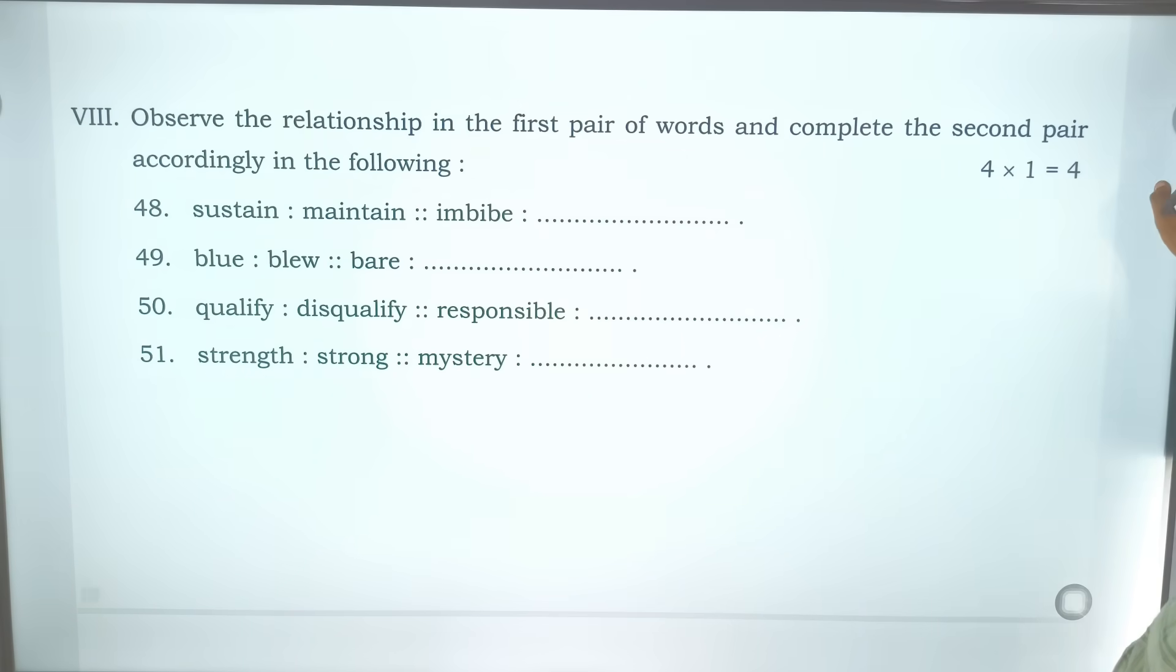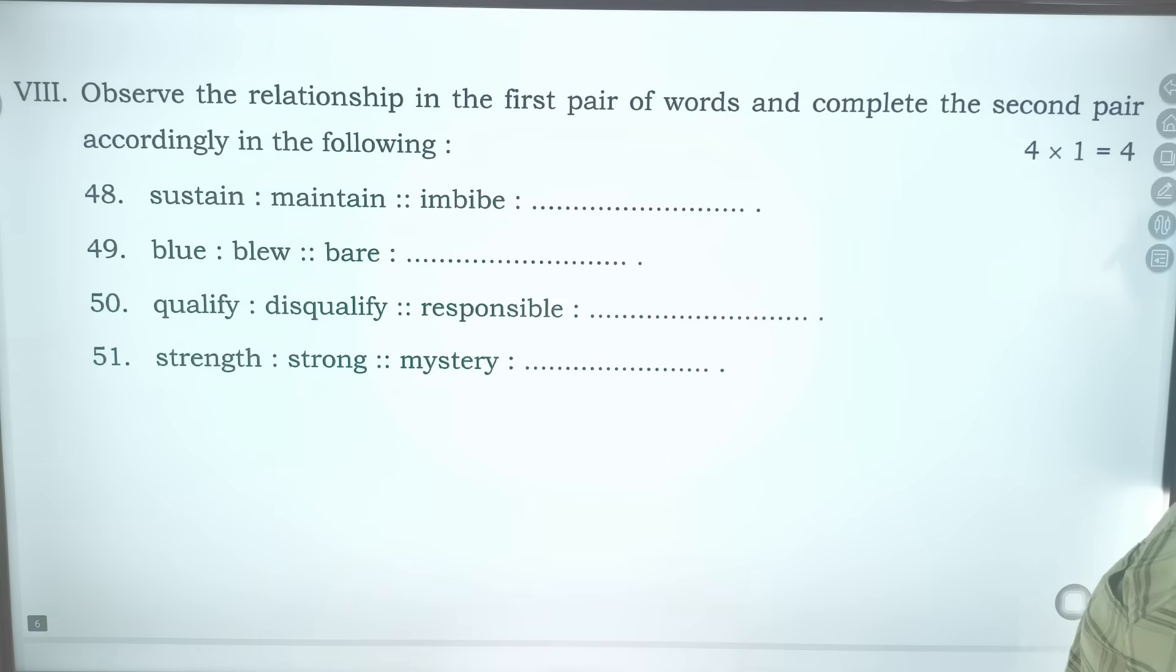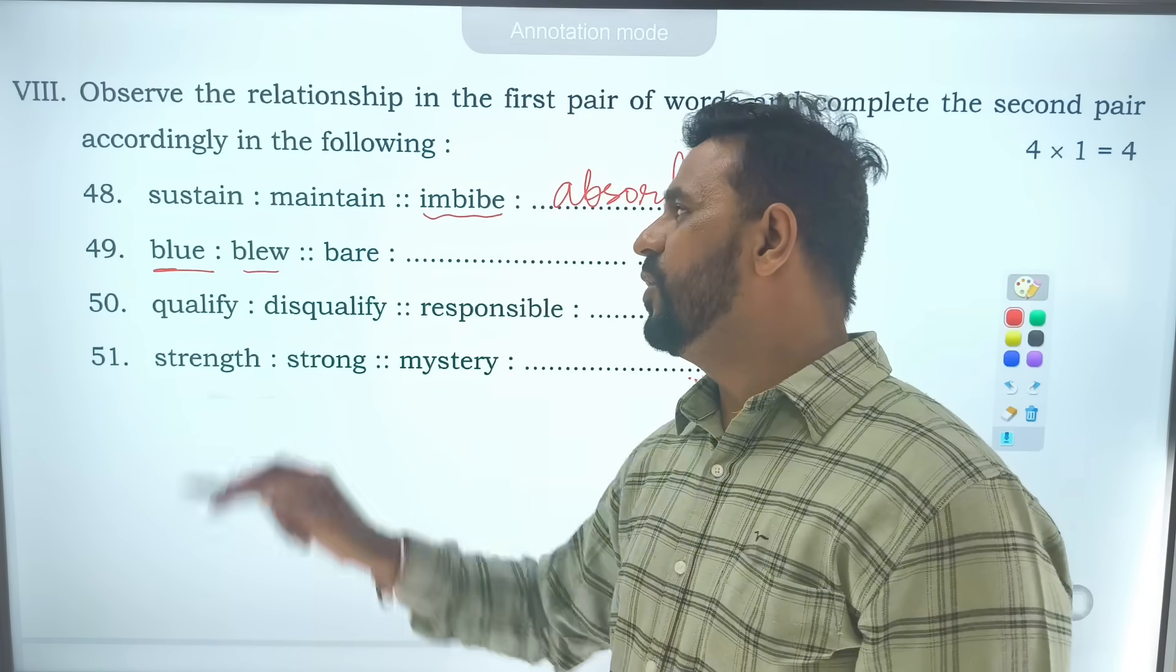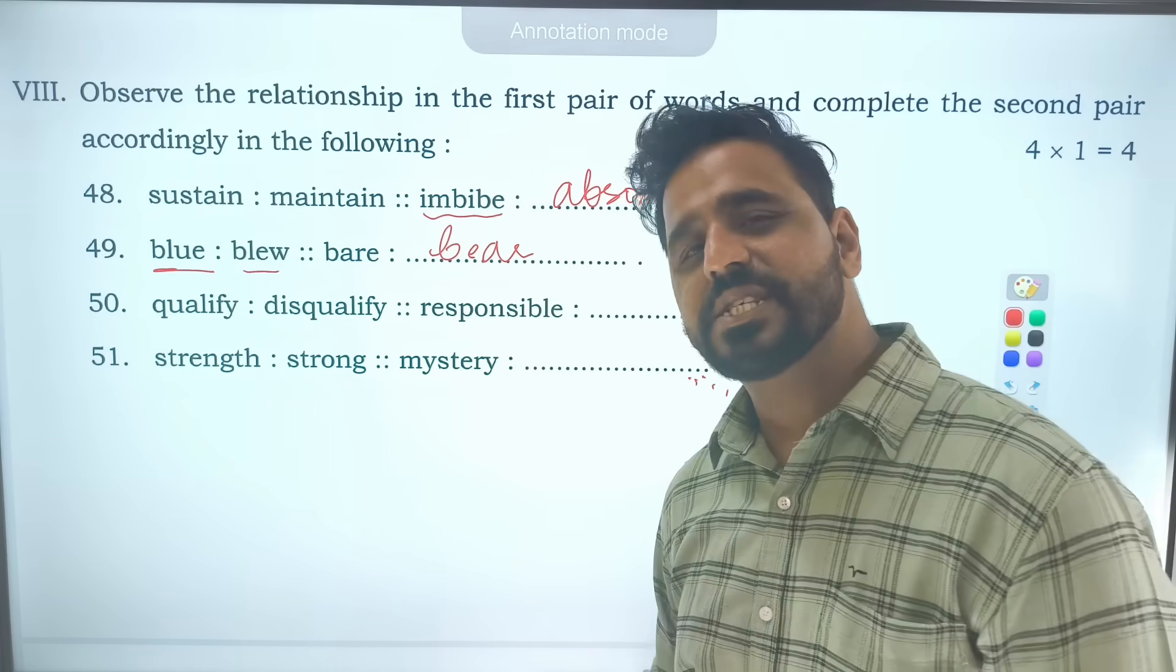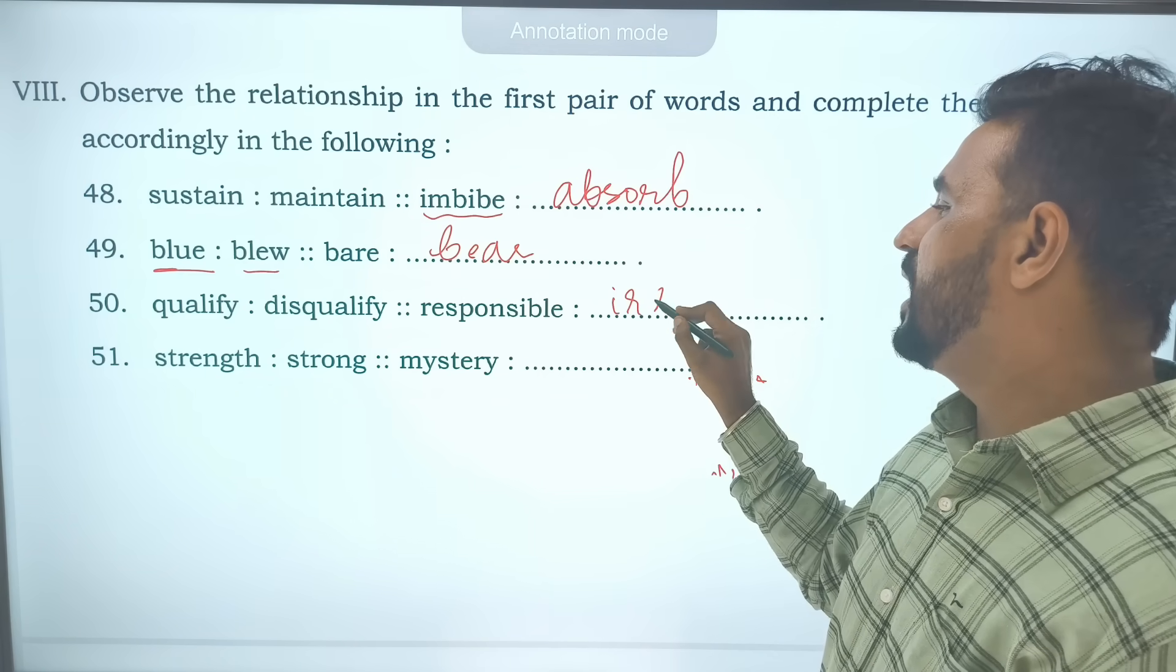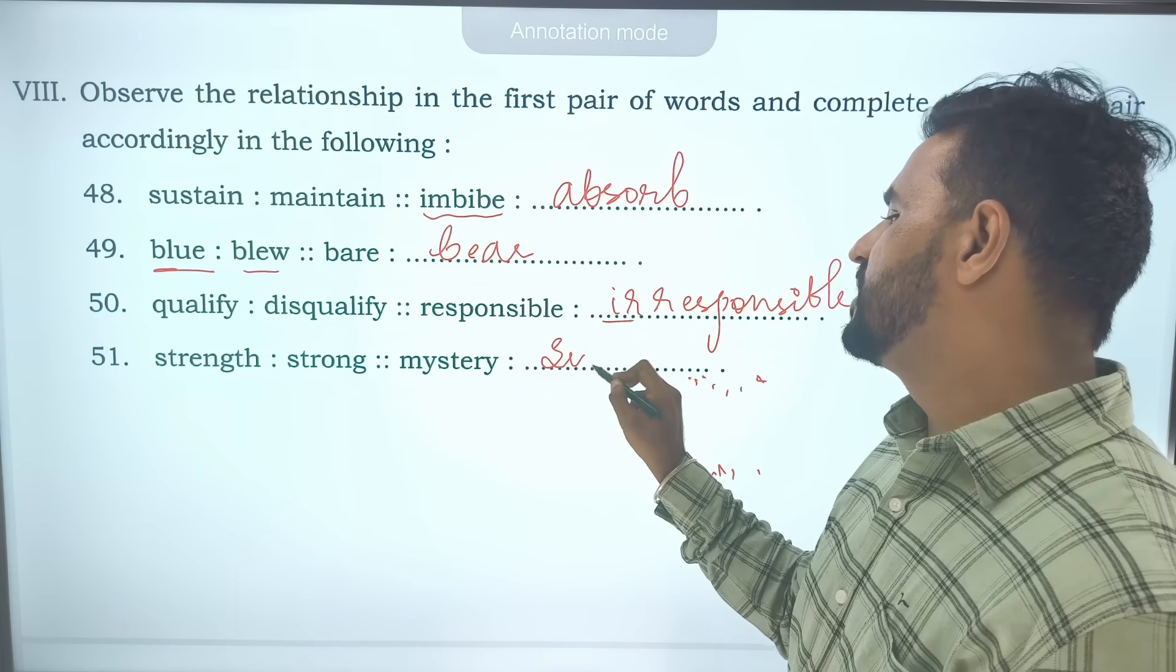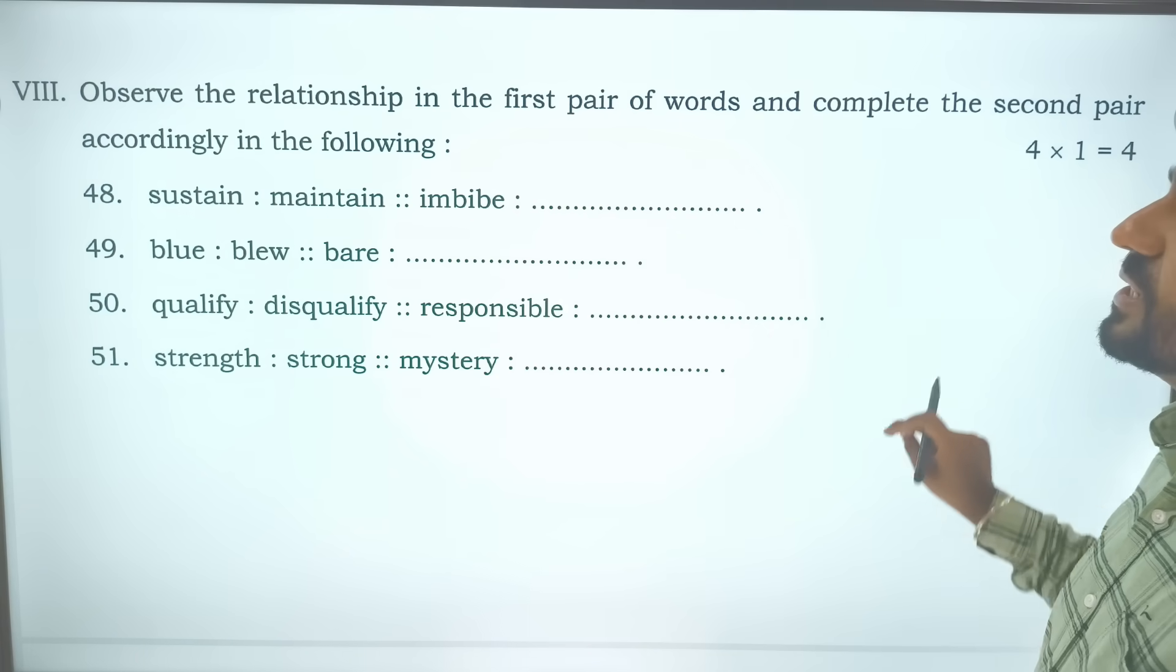You can see the questions here. Sustain, the meaning of sustain is to maintain. Similarly the meaning of imbibe is to absorb. Blue, bear. Bear means it is pronounced as bear. Qualified, disqualified. Responsible, irresponsible. The person is very irresponsible. Strength means strong. Mystery means suspense. I hope you got this.